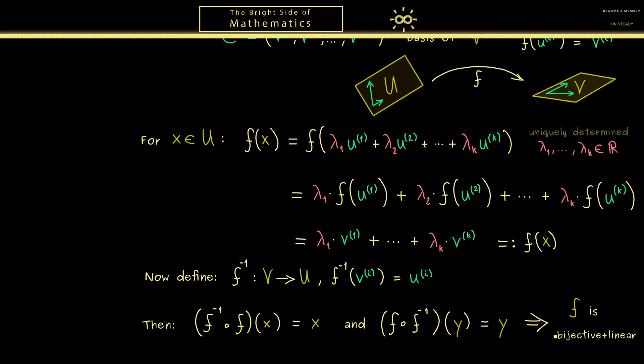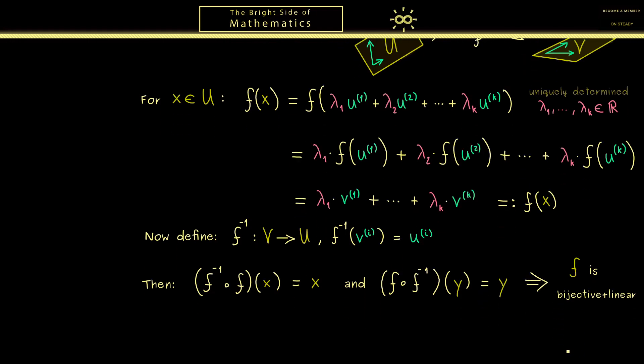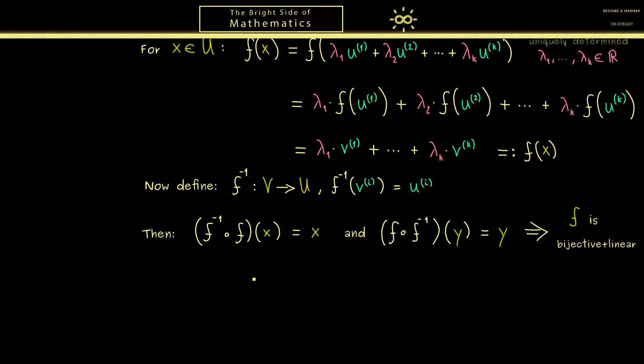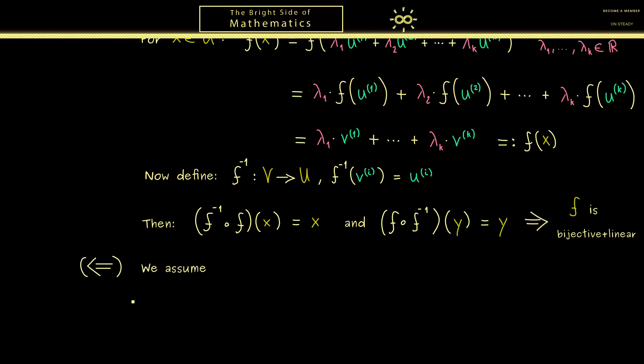There we have it, there is our bijective linear map F. Hence the first implication from left to right is proven. Now for the implication from right to left we have to assume that we already have such a bijective linear map. And then we want to show that the dimensions of U and V coincide.